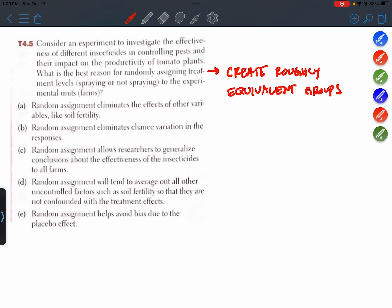B: Random assignment eliminates chance variation in the responses. I don't think you can eliminate chance variation. There's still going to be differences from one farm to another. Even two farms that both get sprayed are not going to have the exact same response because there's just going to be natural variation between those farms. So I'm comfortable eliminating B.